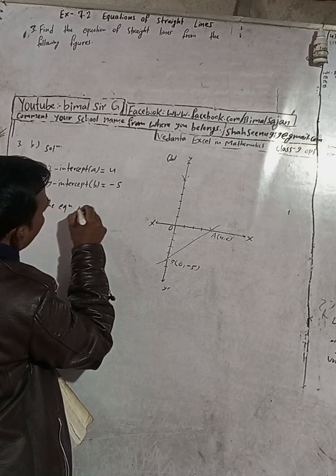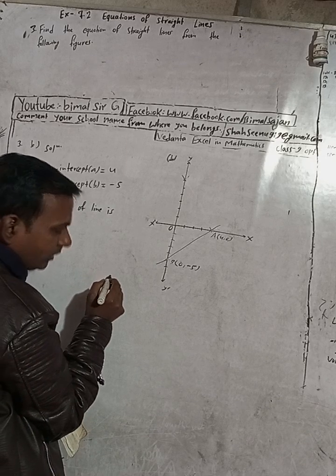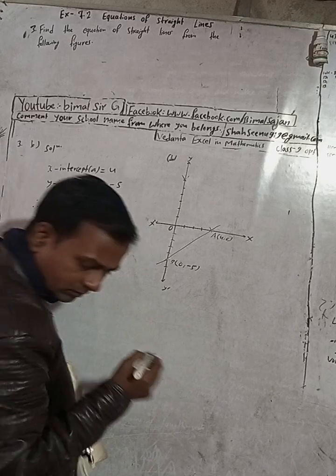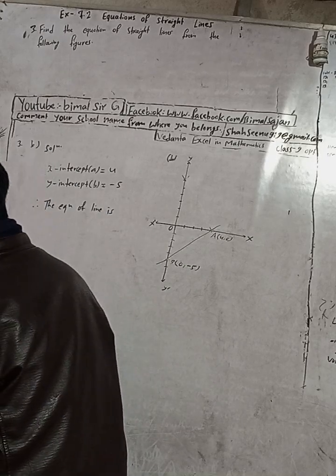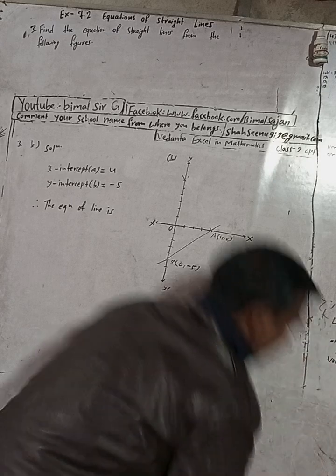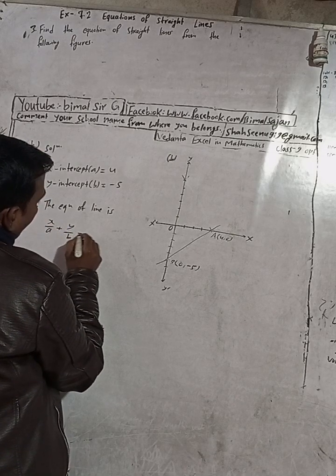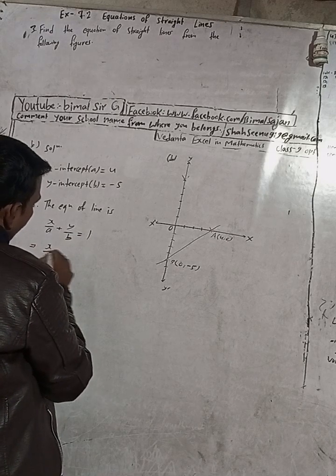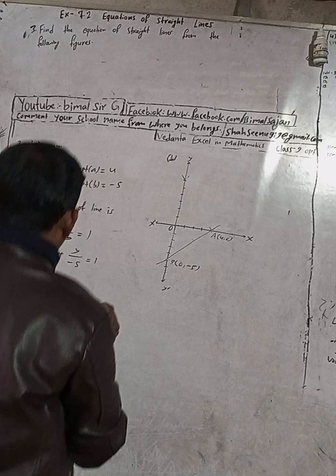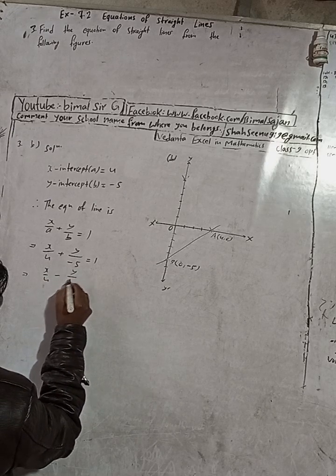Substituting: x/4 + y/(-5) = 1, which becomes x/4 - y/5 = 1. The LCM of 4 and 5 is 20. Dividing 20 by 4 gives 5, so multiply x by 5; dividing 20 by 5 gives 4, so multiply y by 4. This gives 5x - 4y = 20.